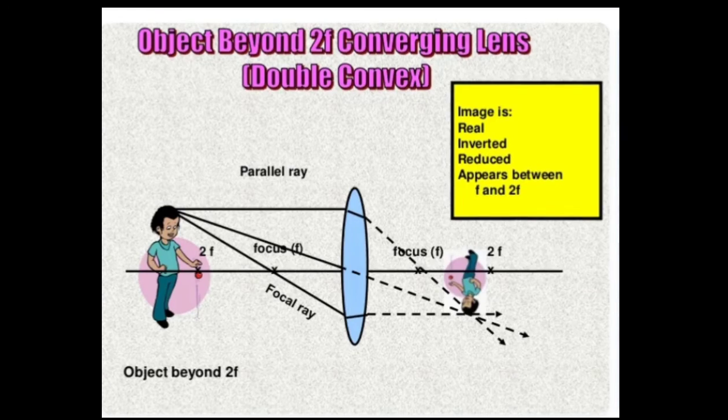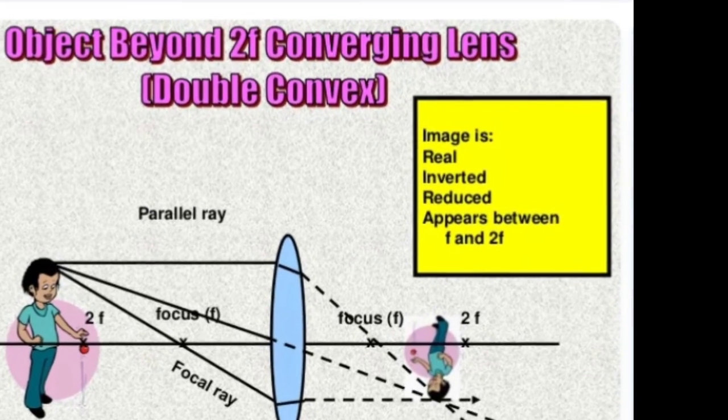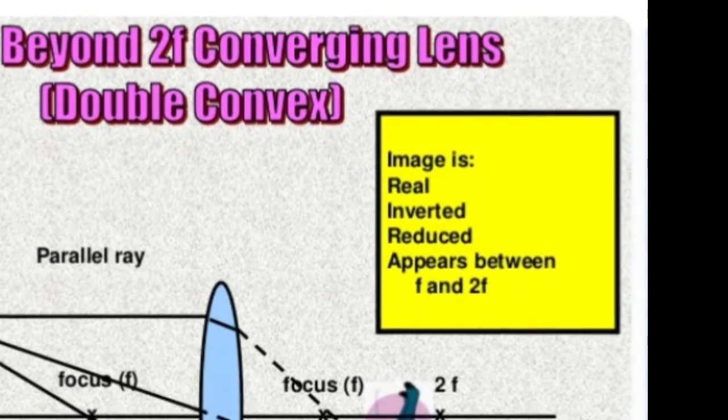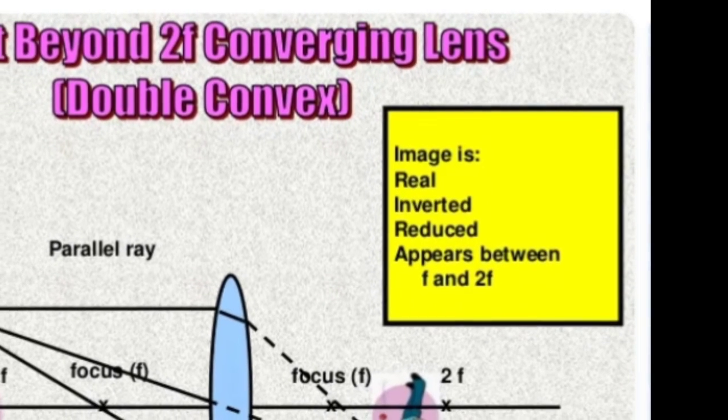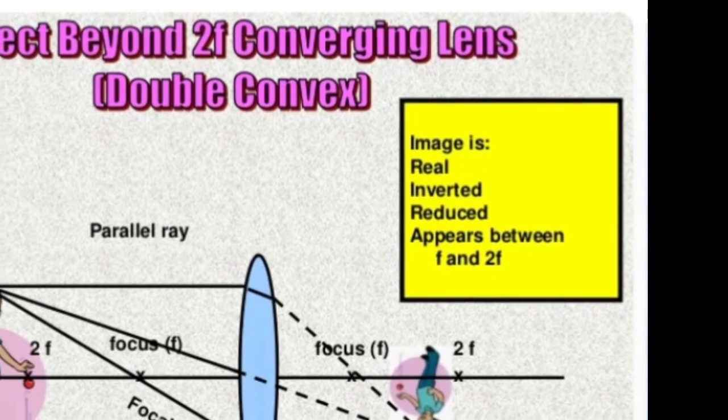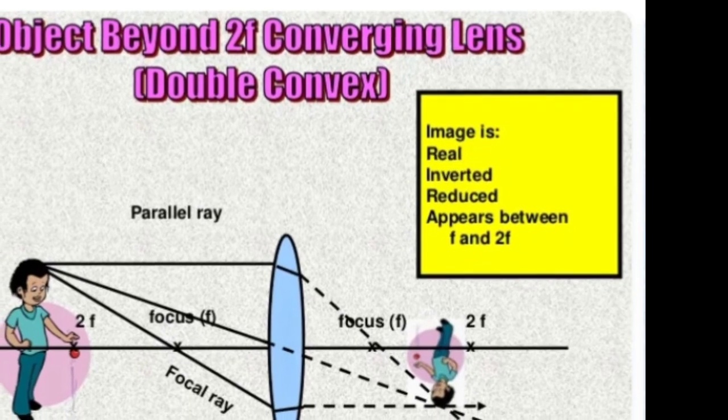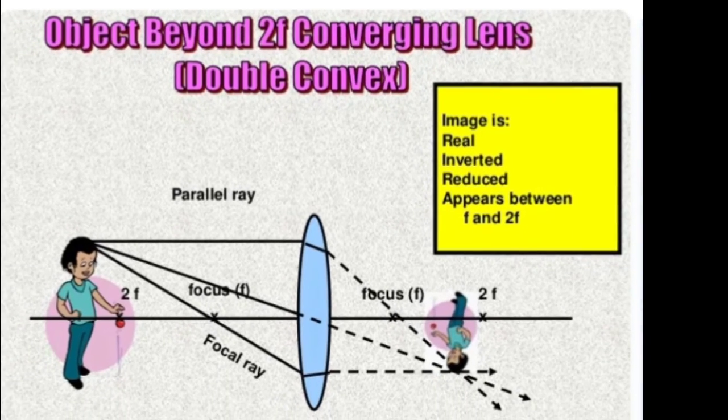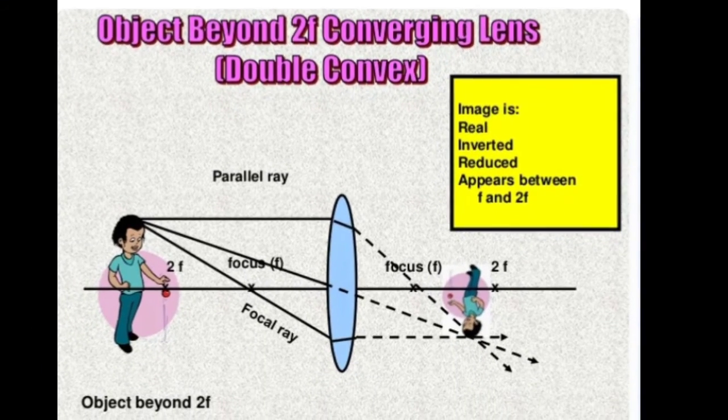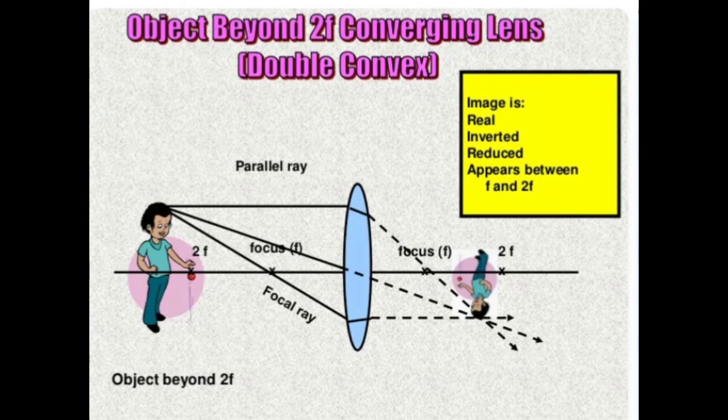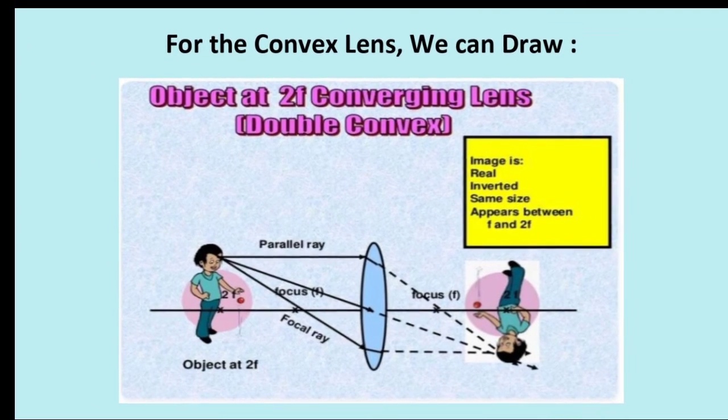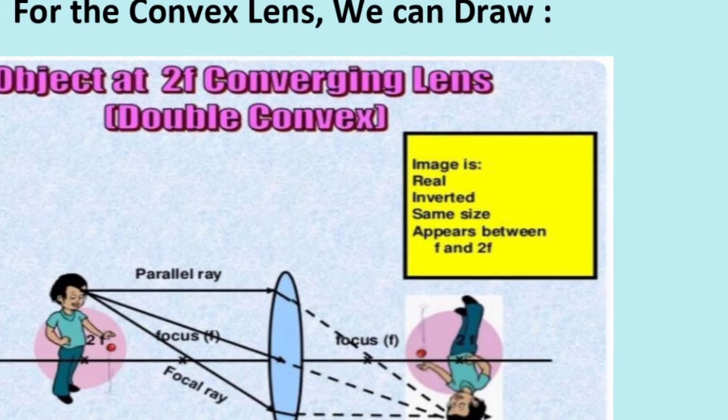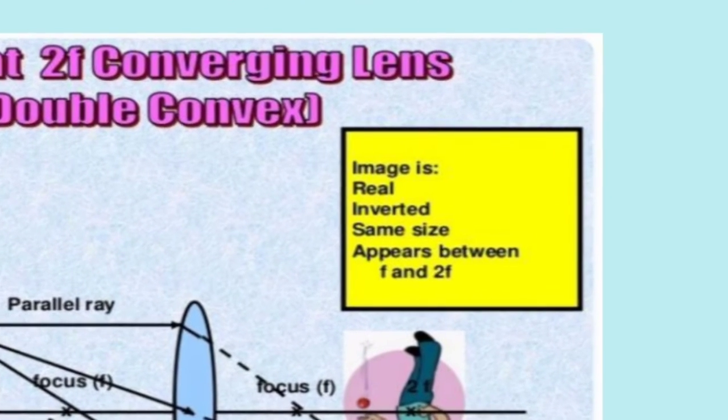Here we see that the object is beyond the double focal point. Therefore, the image is real, inverted, and reduced. It will appear between the focal point and double focal point.